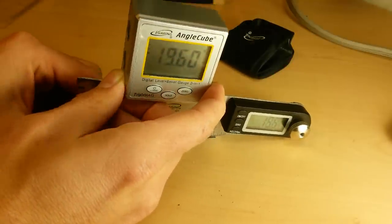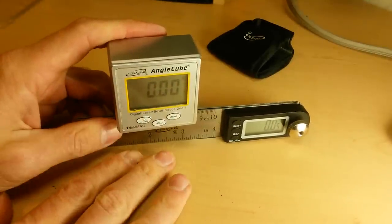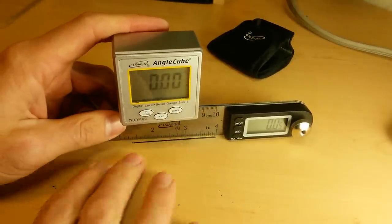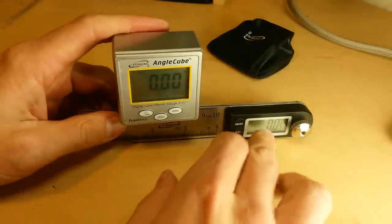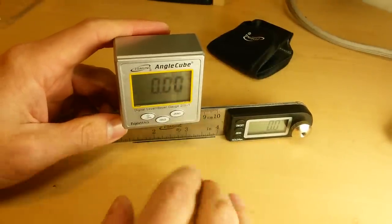So that means that the angle cube is actually doing a pretty good job. It's measuring angle using its sensors in relationship to an arbitrary value that we set in comparison to a completely accurate set protractor. So that's pretty good.